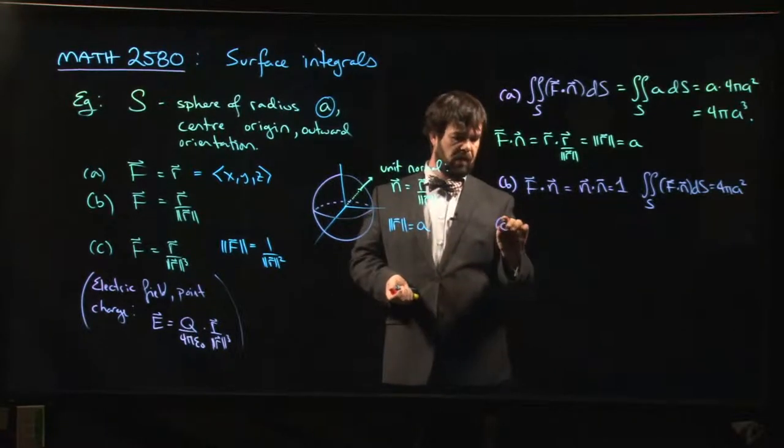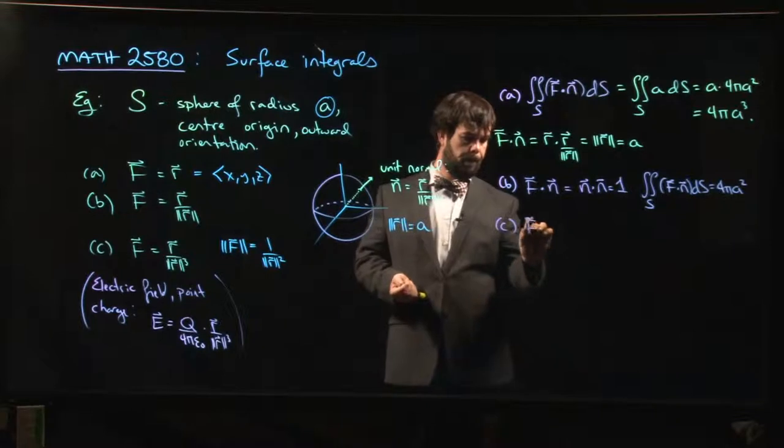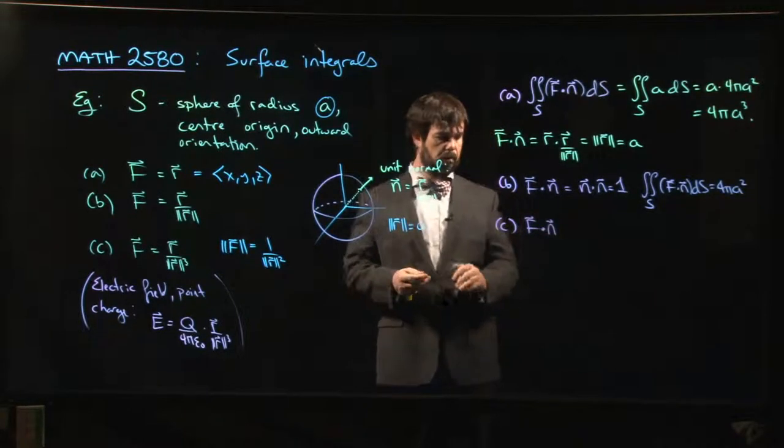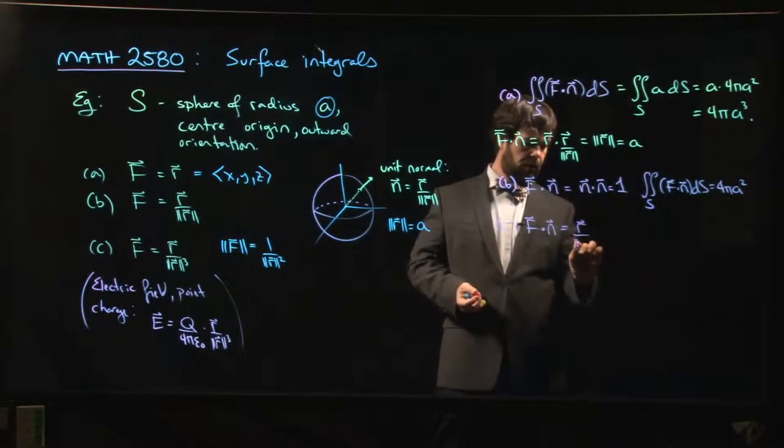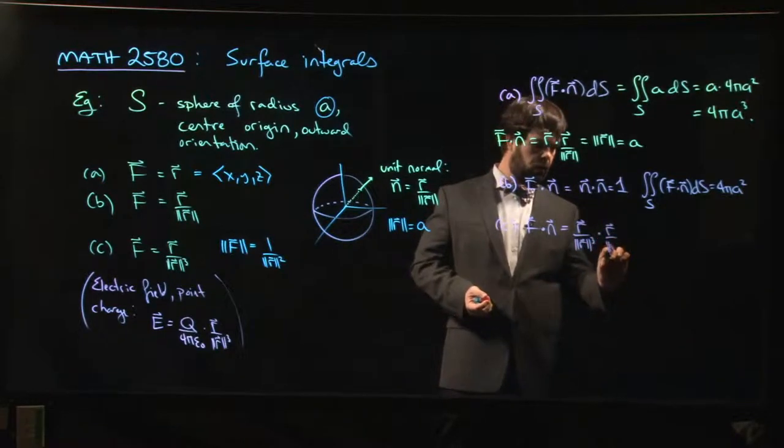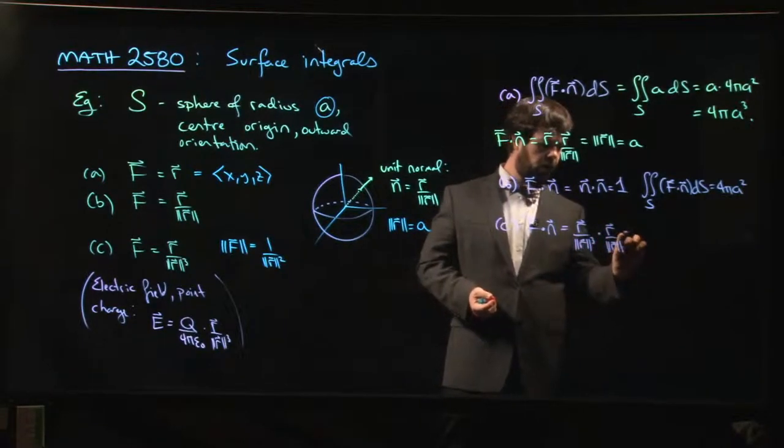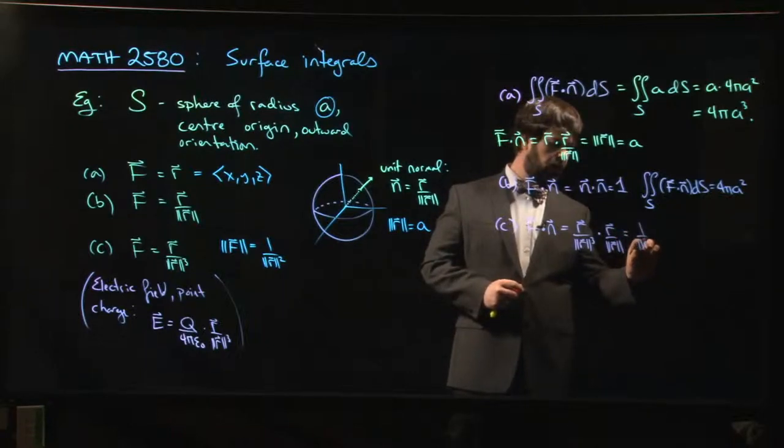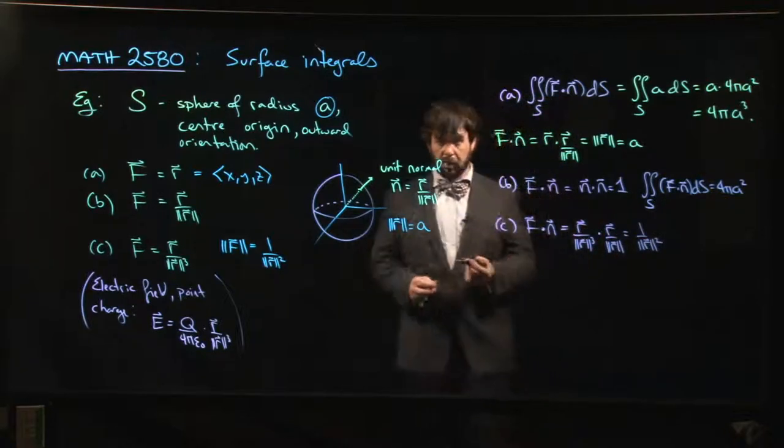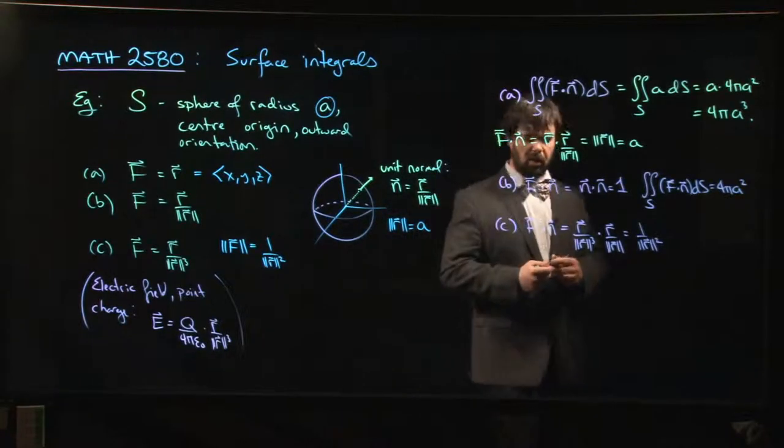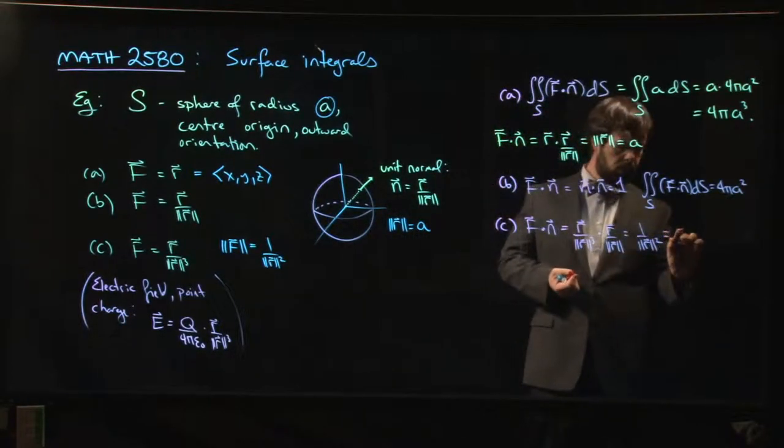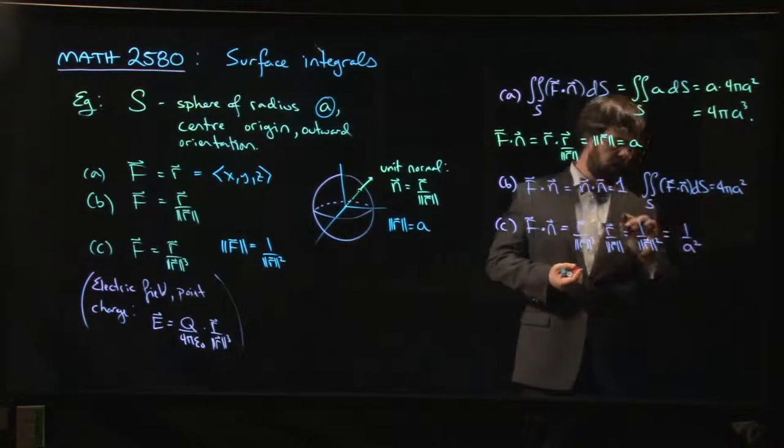For the last one, F dot N: we have r over magnitude of r cubed dotted with r over magnitude of r. That gives us this inverse square. We'll get magnitude of r squared up top, magnitude of r to the fourth power on the bottom. We do some cancellation and get 1 over A squared.